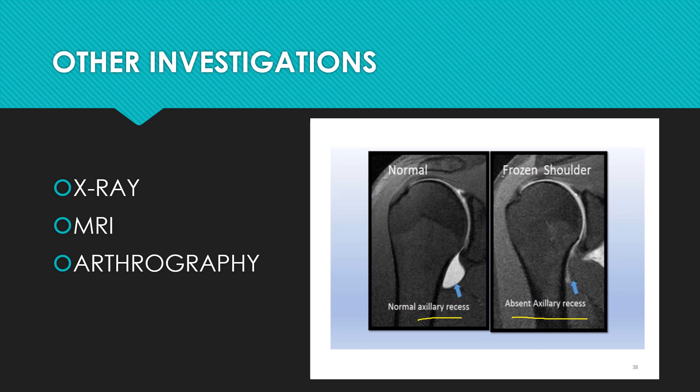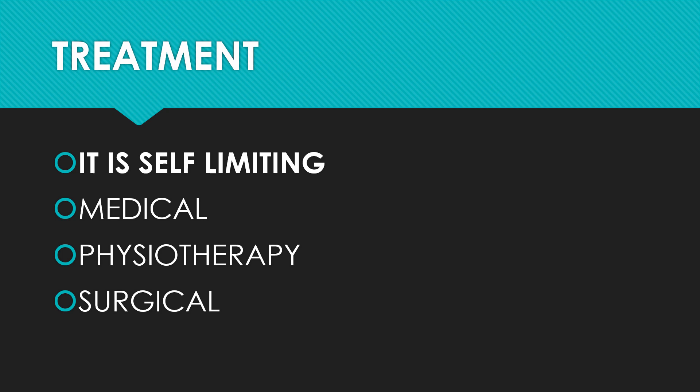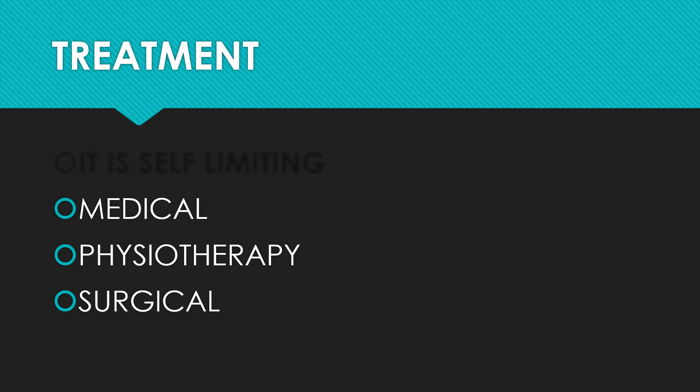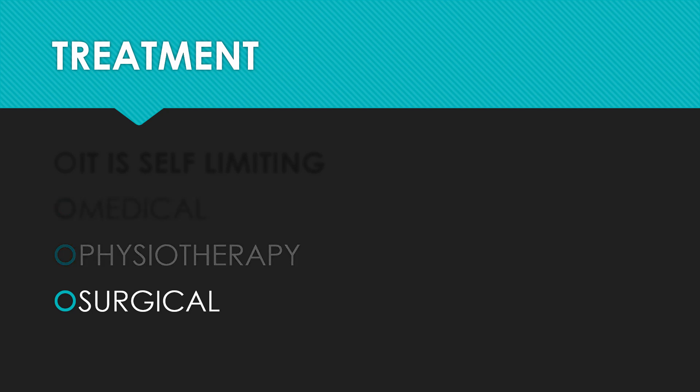Arthrography is done very rarely and is not considered a major diagnostic test. Regarding treatment, the key point is that frozen shoulder is self-limiting; however, recovery may take months to years, starting at the third stage — the thawing stage. Treatment options include conservative management, which covers medical and physiotherapy management, and surgical management, which is reserved for extensive cases where conservative management has failed.